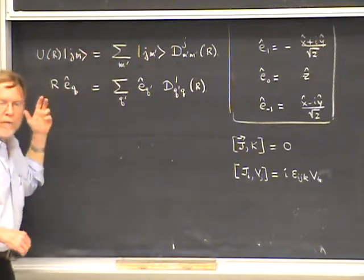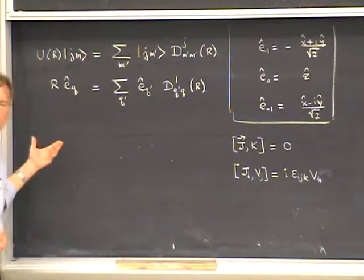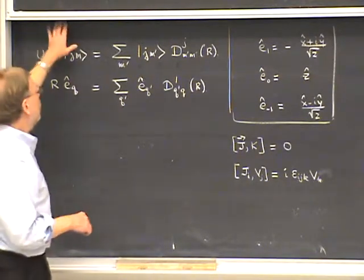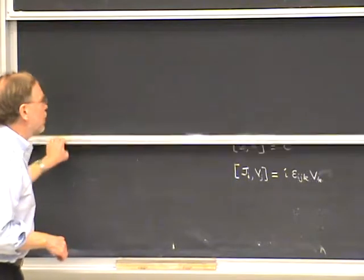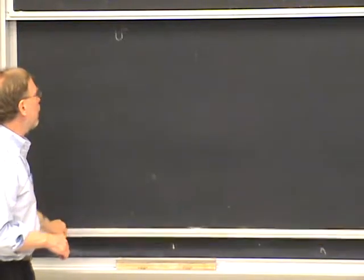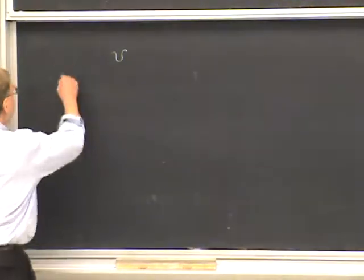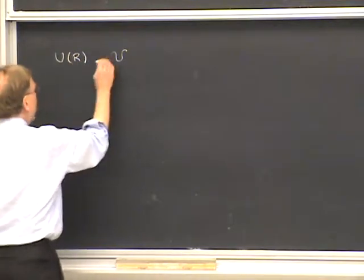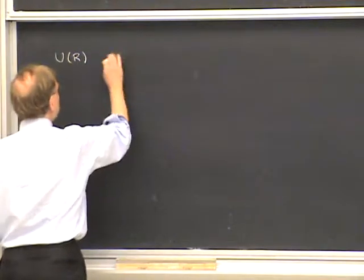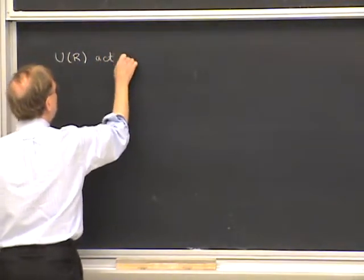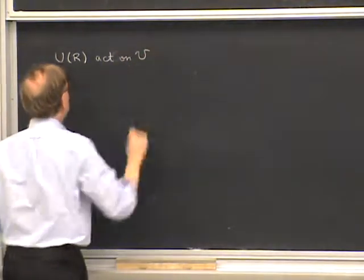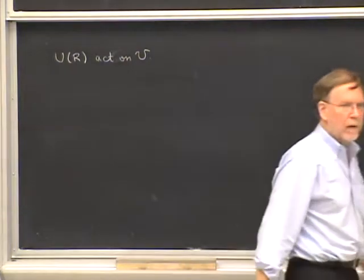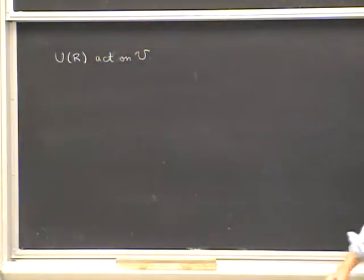The main emphasis today is going to be on yet a third kind of vector space, namely the vector space of operators. In any case, let me just call it D to be general. Now let's suppose we have a unitary representation of rotations that act on this vector space D such that the operators reproduce the multiplication law of rotations.